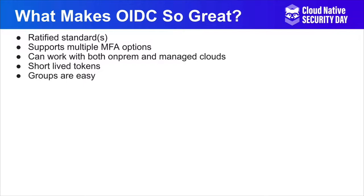OpenID Connect will work with both on-prem and managed clouds. You can use impersonation with OpenID Connect, and it'll work with any cloud, so you can authenticate the same way to your on-prem stuff as your off-prem stuff. And short-lived tokens — so you don't have these five-year certificates, you have these one-minute tokens. And groups are easy because those tokens are short-lived. It's just a bit of JSON that's digitally signed, and you can shove all your groups right in there.